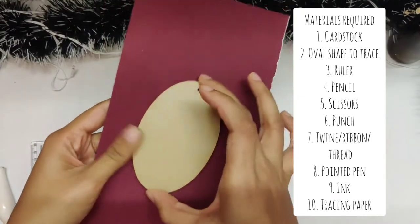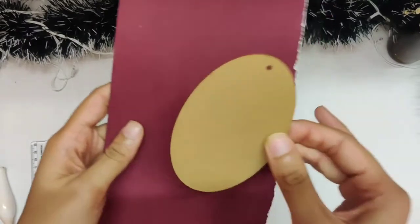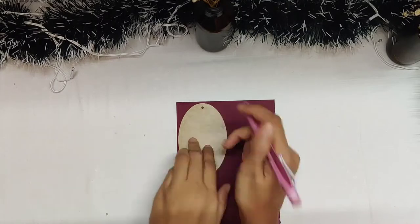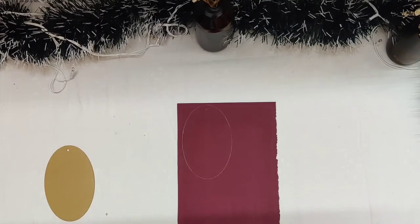I will be making an oval in shape, so for that I have an oval acrylic piece and some craft paper or cardstock. First up, I'm drawing the shape of the oval. I will punch a hole at the top.